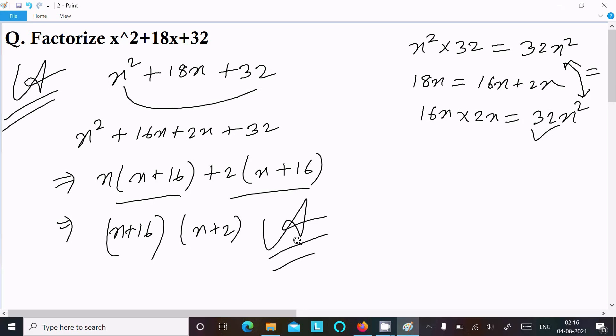The important thing is the first and third term, multiply them. Then write the middle part 18x. We can write 18x like 14x plus 4x, or 18x as 14x plus 4x.